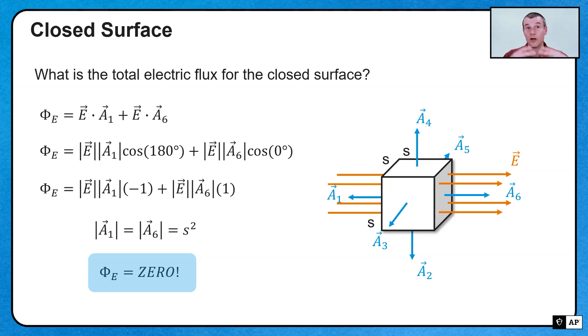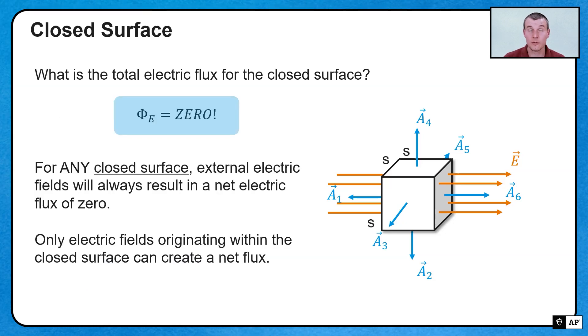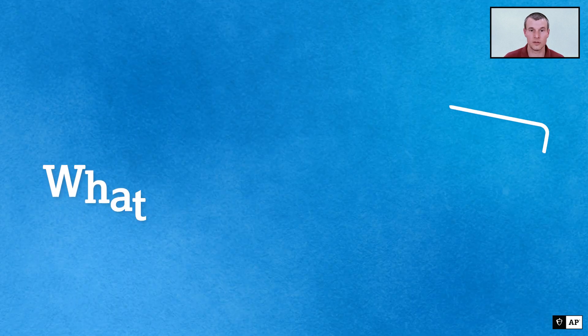And in fact, that's going to be true for all closed surfaces. We will explore this in future videos, especially talking about Gauss's law. But for any closed surface, if there's only field externally, it's all going to cancel out. It's only the electric fields that are inside that are going to generate a flux. And we'll explore that, as I said more, with Gauss's law.